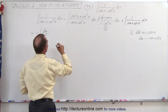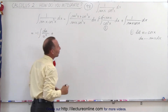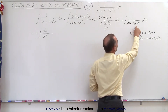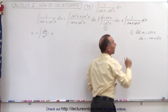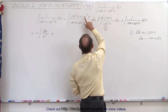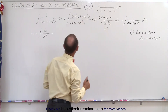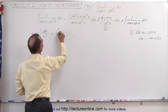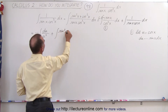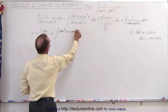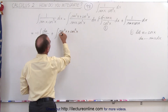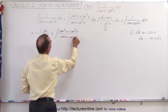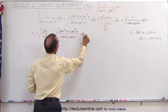On our second integral, notice we have something we've seen before: the integral of 1 over sine times cosine. So we're going to replace the 1 by the sum of sine squared plus cosine squared again. The second integral becomes the integral of sine squared of x plus cosine squared of x, divided by sine of x cosine of x, dx.